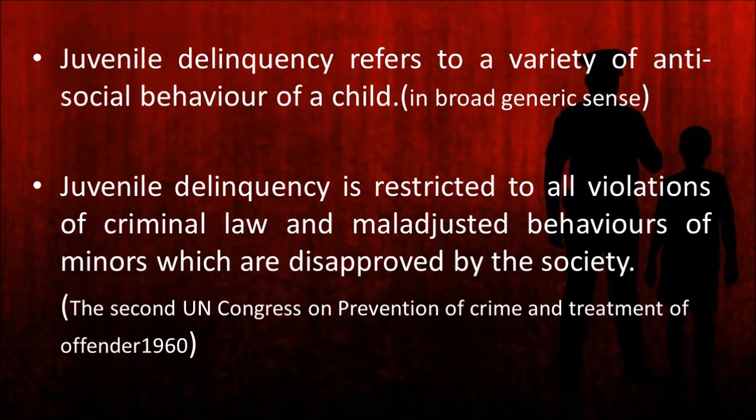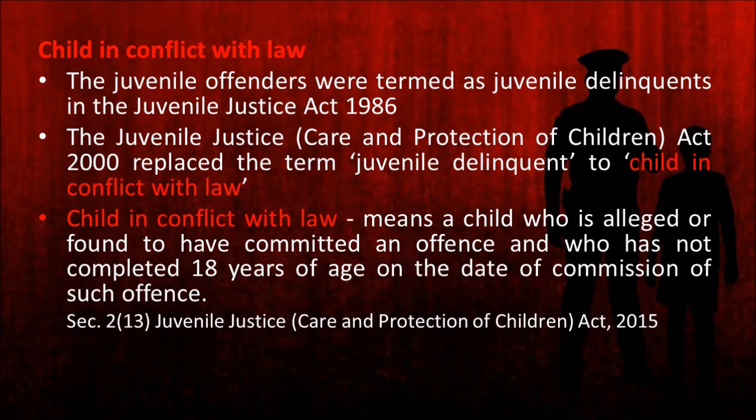The juvenile offenders were termed as juvenile delinquents in the Juvenile Justice Act of 1986. But subsequently, the Juvenile Justice Care and Protection of Children Act 2000 replaced the term juvenile delinquent with child in conflict with law. The child in conflict with law is defined as a child who is alleged or found to have committed an offence and who has not completed 18 years of age on the date of commission of the offence.